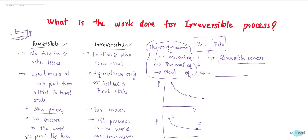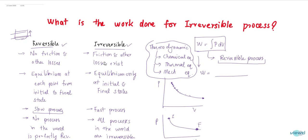A reversible process means a slow process. If a system is undergoing a slow process, then it can be reversible — it can be reversible, not that it is reversible. Irreversible means a fast process. A slow process can be irreversible. But mostly in our world, the processes are very fast, and so more irreversibility is present. No process in the world is perfectly reversible. We need to try to achieve reversibility, but we cannot attain perfectly reversible. All processes in the world are irreversible because every process is fast.